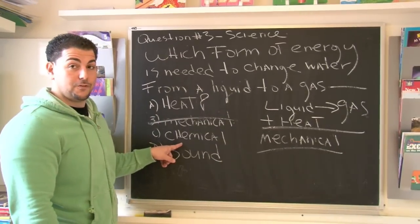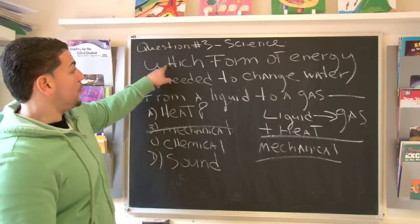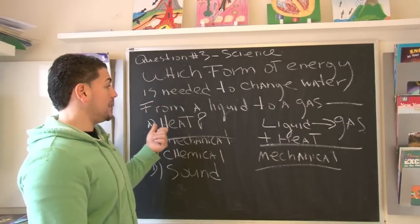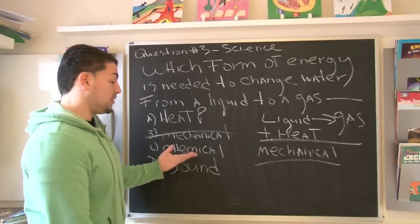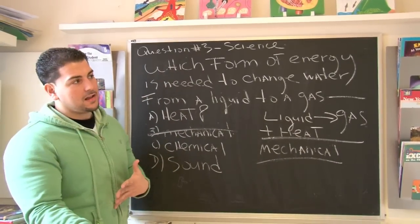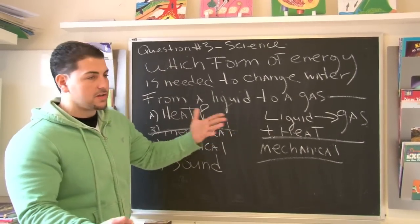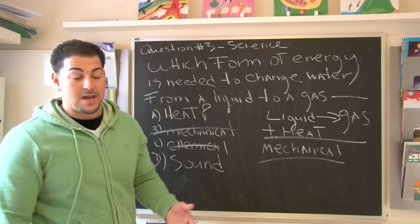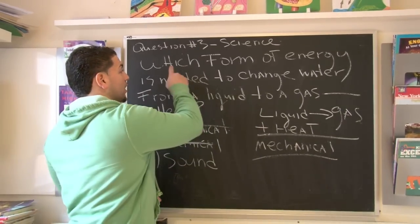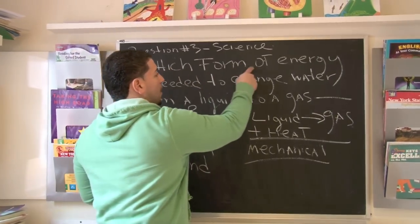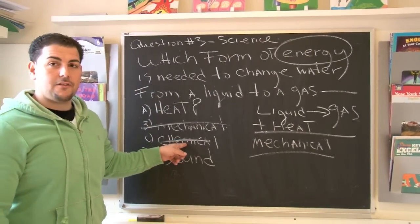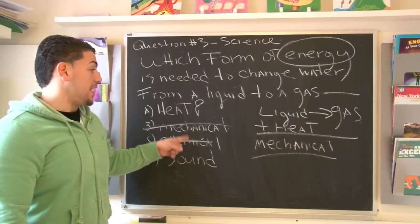Here's one where you might get a little confused because it says, which form of energy is needed to change water from a liquid to a gas? And then it says chemical. If you're thinking about science, you think chemical, science, liquid, gas, that probably makes sense. Actually, it doesn't. It doesn't make sense because at the end of the day, look at the question. Which form of energy? Chemical is not a form of energy. But we know that heat is.